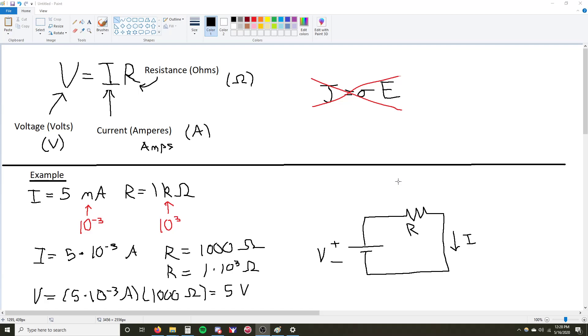Ohm's Law has two forms. V equals IR is the circuit analysis form. J equals sigma times E is the material science or electromagnetic form. We will not be covering the J equals sigma times E form.